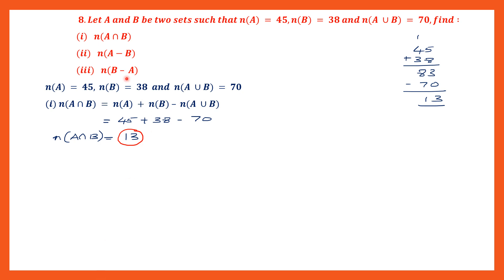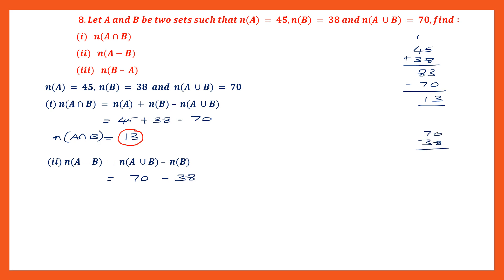Question 2: we have to find the cardinal number of A minus B. The formula is: cardinal number of A union B minus cardinal number of B. Substituting: 70 minus 38. Borrowing: 10 minus 8 is 2, 6 minus 3 is 3 — giving us 32. We have found the cardinal number of A minus B, and the answer is 32.